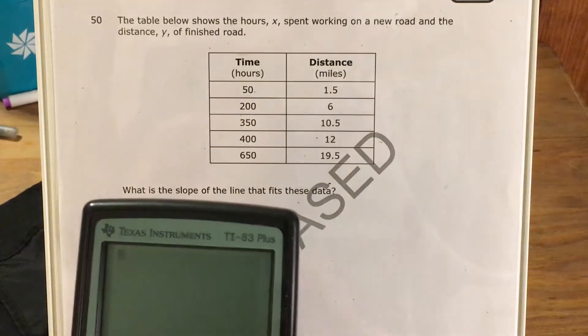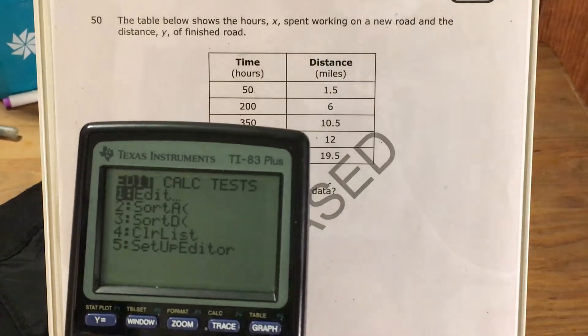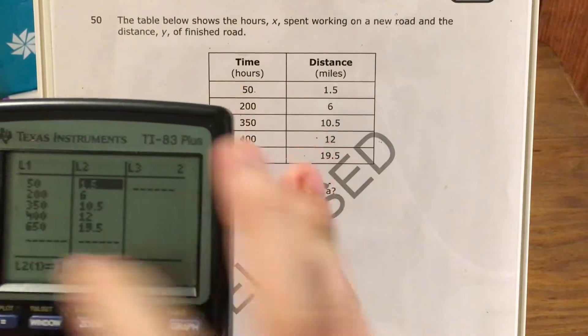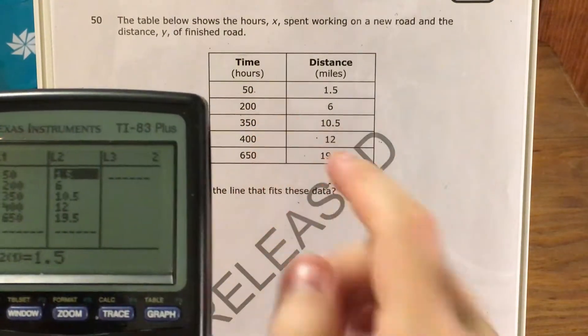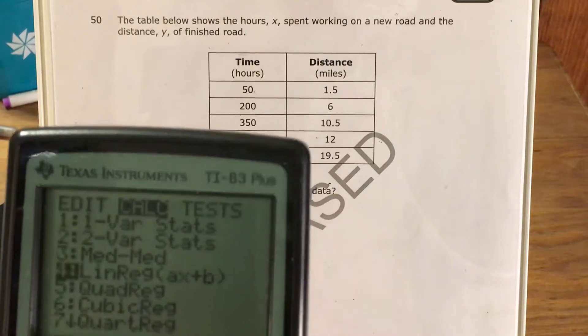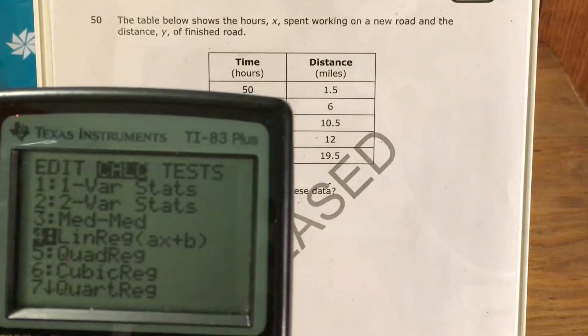So I go to stat and edit, and I just went ahead and typed in all this data. So list 1 where my times, list 2 I put in my distances, I press stat again and calc, and I say linear regression AX plus B.